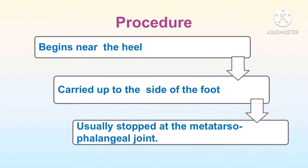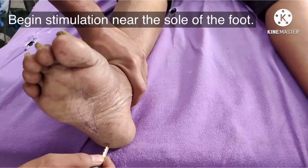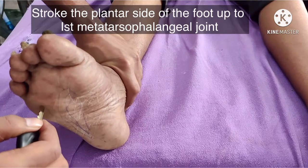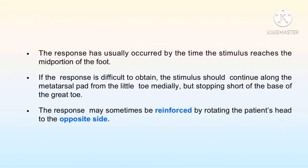Now let us see this on our patient. We begin stimulation near the sole of the foot and stroke the plantar side up to the first metatarsophalangeal joint. The response has usually occurred by the time the stimulus reaches the mid portion of the foot. If the response is difficult to obtain, the stimulus should be continued along the metatarsal pad from the little toe medially, stopping short of the base of the great toe. The response may sometimes be reinforced by rotating the patient's head to the opposite side.